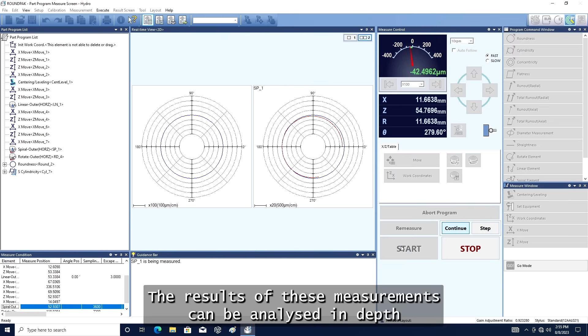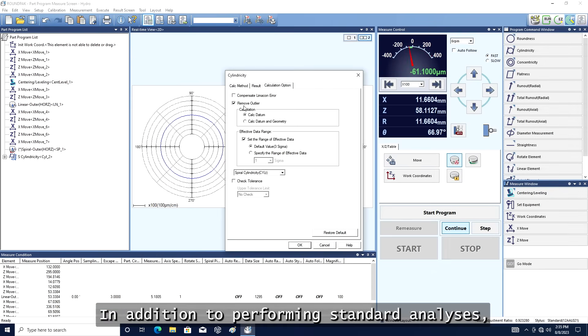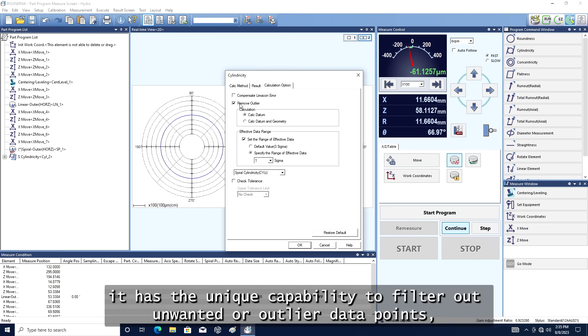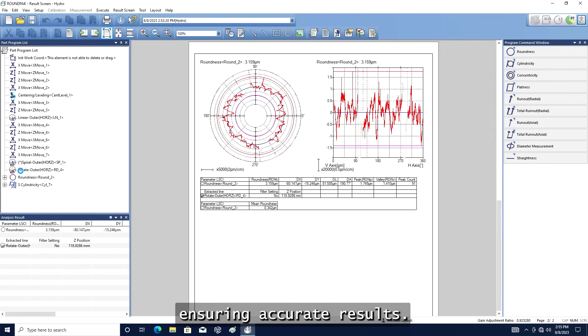The results of these measurements can be analyzed in depth using the Mitutoyo form measurement software, RoundPak. In addition to performing standard analyses, it has the unique capability to filter out unwanted or outlier data points, ensuring accurate results.